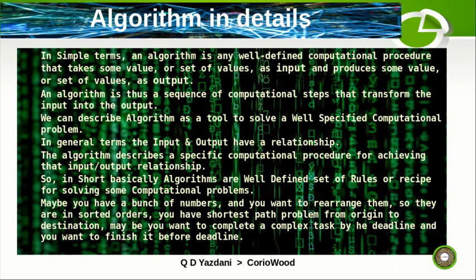Maybe you have a bunch of numbers and you want to rearrange them in sorted order. There's also the shortest path problem — from origin to destination — just like Google Maps. Google solved it using graph algorithms. You might also want to complete a complex task by a deadline. At the end of the day, algorithms are about solving computational problems by transforming input into output.